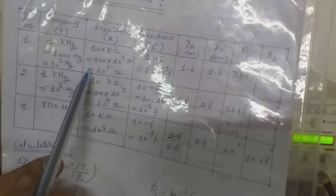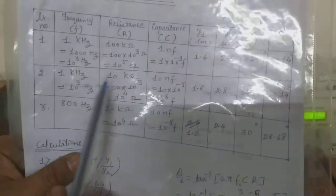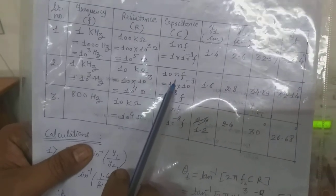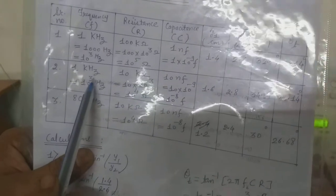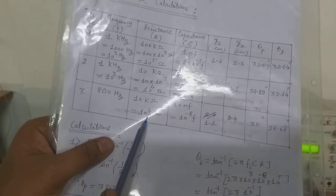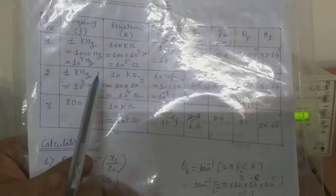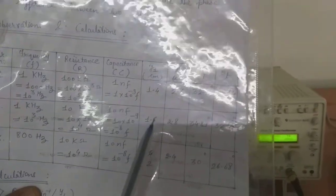You have to repeat the same procedure for two more readings. In the second reading, frequency is again 1 kHz, resistance is 10 kΩ, and capacitance is 10 nanofarads — two parameters are changed. For the third reading, frequency is changed to 800 Hz while resistance and capacitance remain the same. Out of the three parameters, you can vary any one value, but the ellipse inclination must change to affect Y1 and Y2.